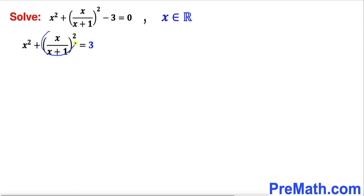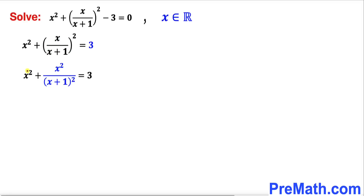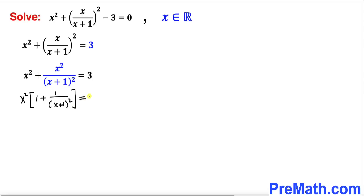Now let's focus on and manipulate this fraction. We can write x as x² over x+1, and the denominator x+1 as (x+1)². We can see that x² is common between the two terms, so we factor out x², and inside the bracket we get 1 plus 1/(x+1)², equals 3 on the right hand side.